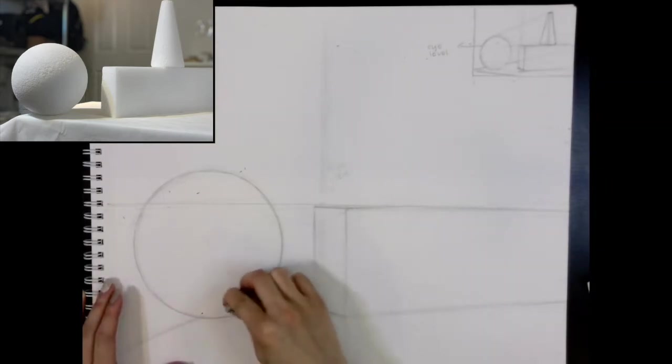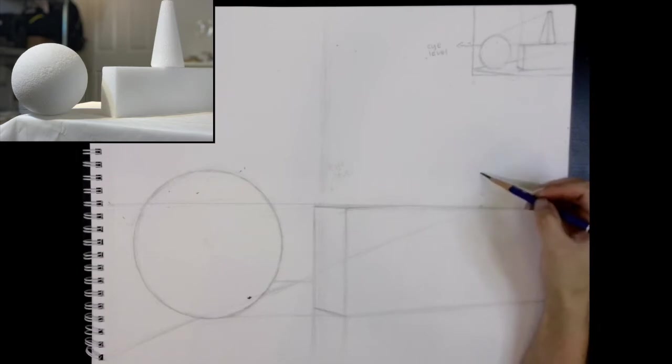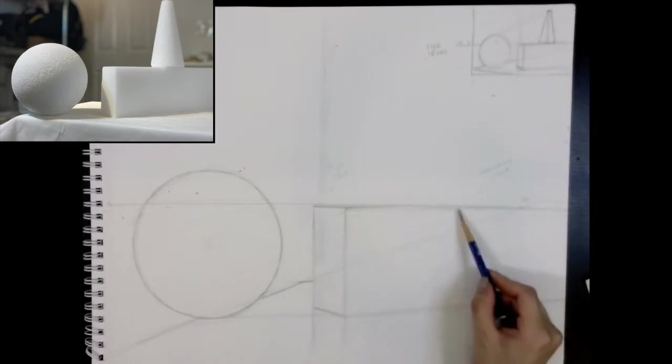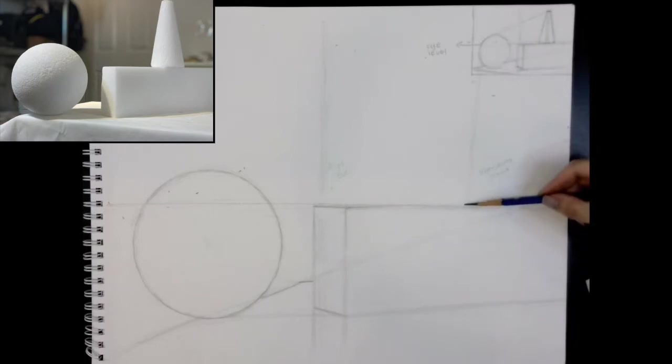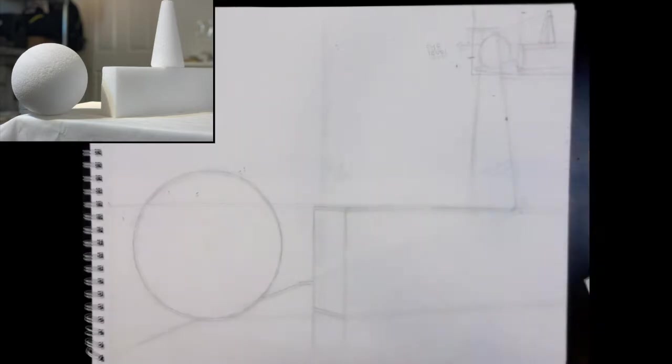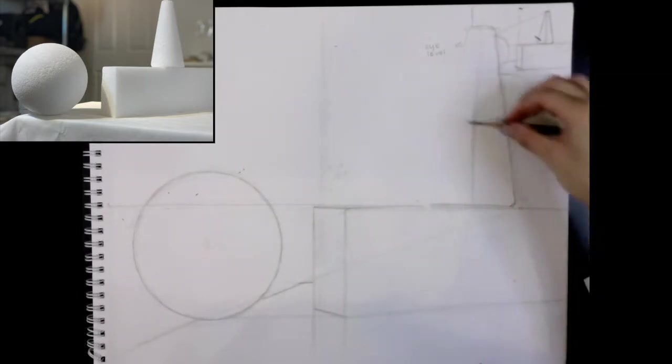So for this exercise, your perspective doesn't have to be accurate, but just make sure that these lines are vanishing towards a point. The edge of the table is vanishing towards the vanishing point in linear perspective. So I marked the vanishing point with a dot. Please note that the rectangular prism and the edge of the table are sharing completely different vanishing points.